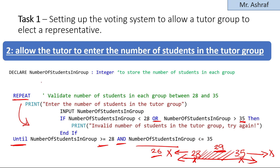I need to also declare the variable NumberOfStudentsInGroup. Its data type is INTEGER, because we're receiving only whole numbers — no decimal points. The purpose of this variable is to store the number of students in each group.